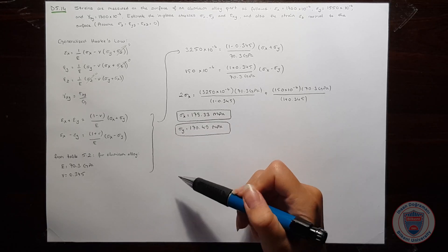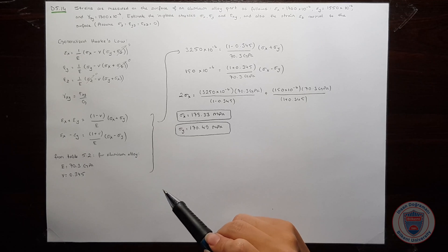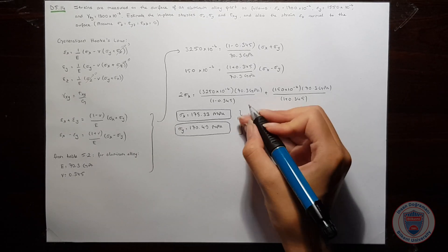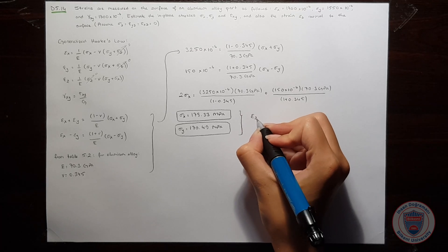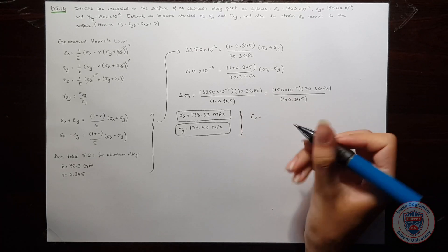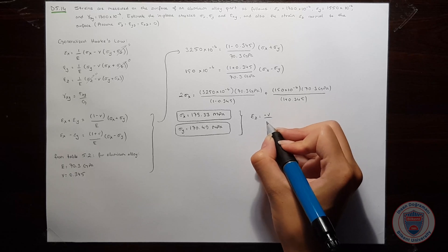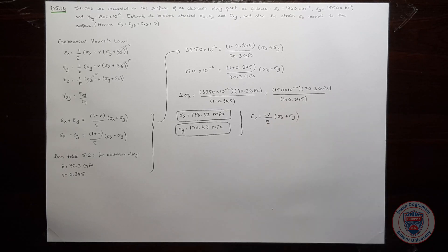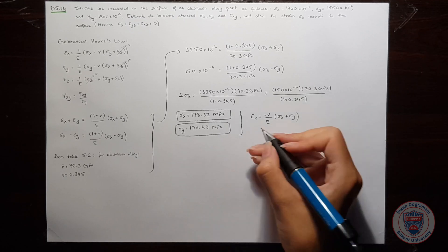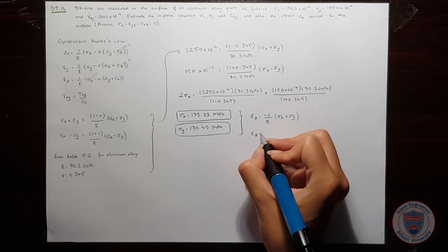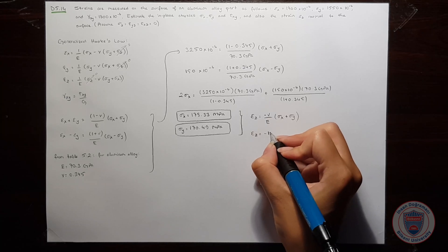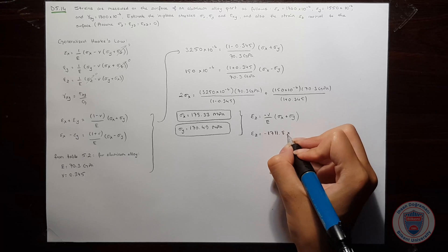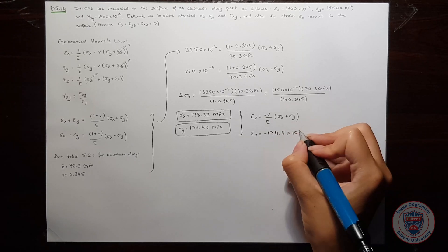Since we know sigma x and sigma y, we can now calculate epsilon z. Let's substitute the values and we get epsilon z is equal to minus 1,711.8 times 10 to the power of minus 6.